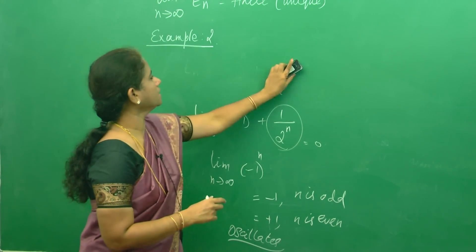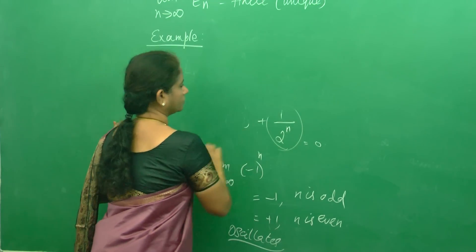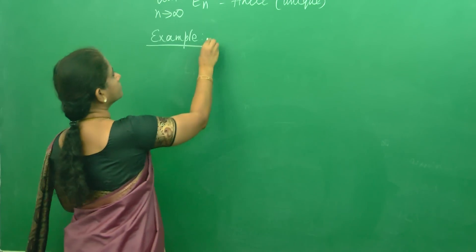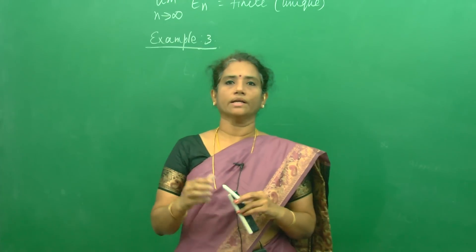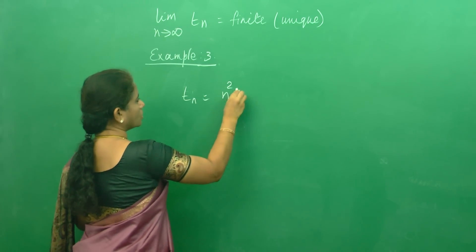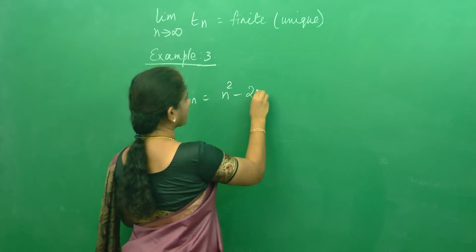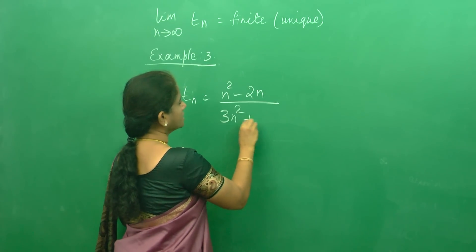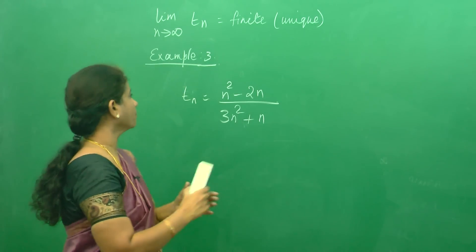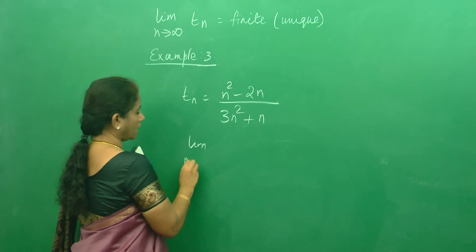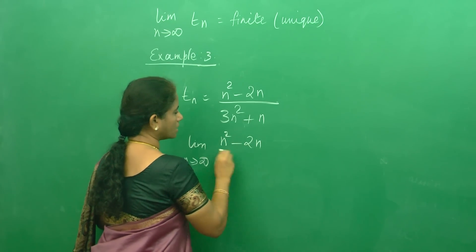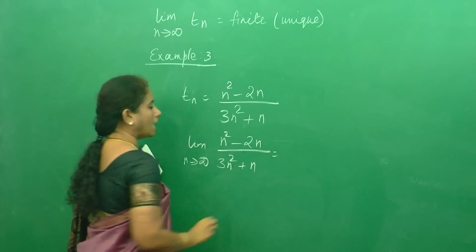We will see one more example. Now I am going to give you Tn directly, so there is no need to find the nth term. Tn = (n² - 2n) / (3n² + n). As the nth term is given, we are going to find the limit as n tends to infinity of Tn.